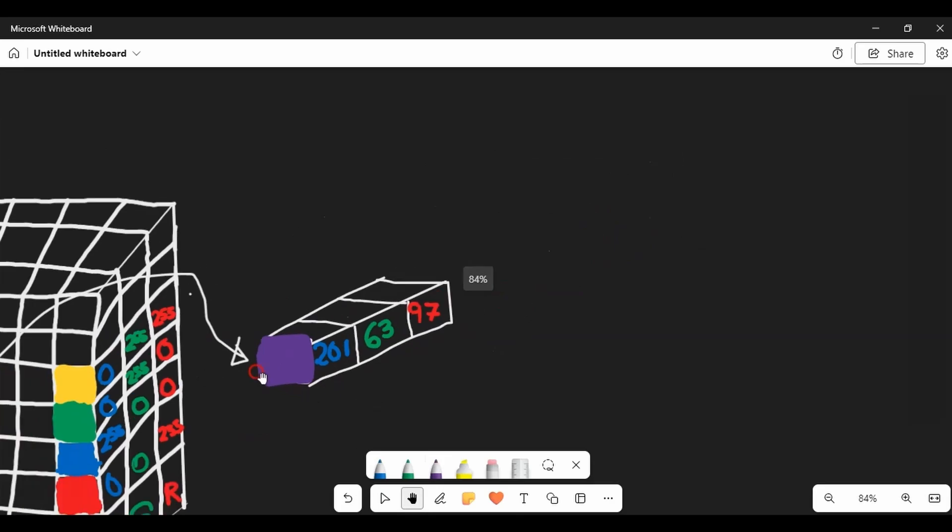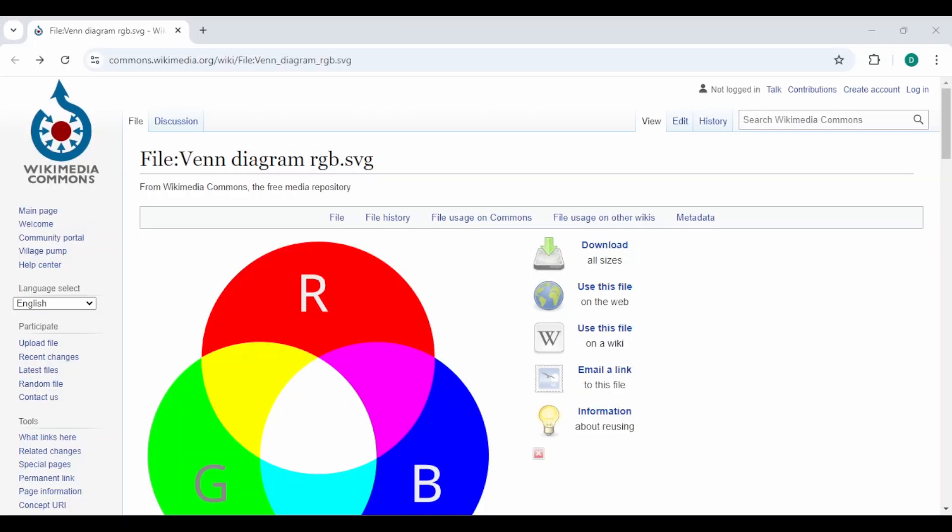OpenCV uses BGR as a default. This is almost the same as a typical RGB that you might be familiar with except that the color data is stored in order of blue then green then red. That's why it's BGR.